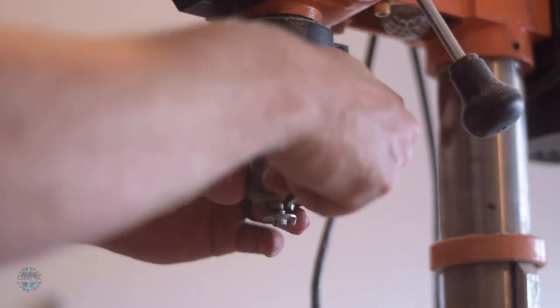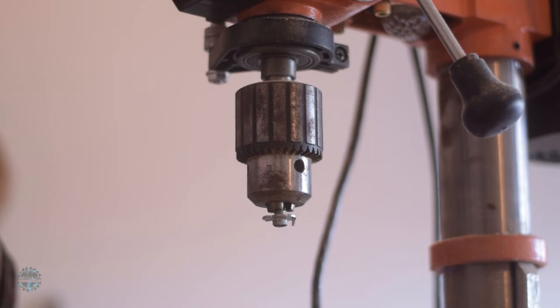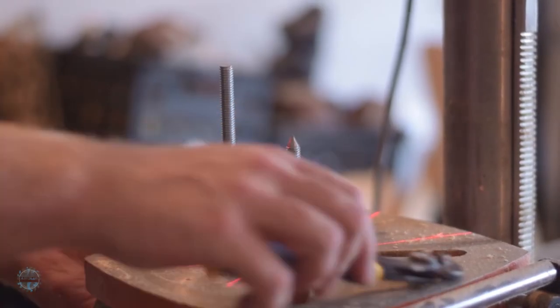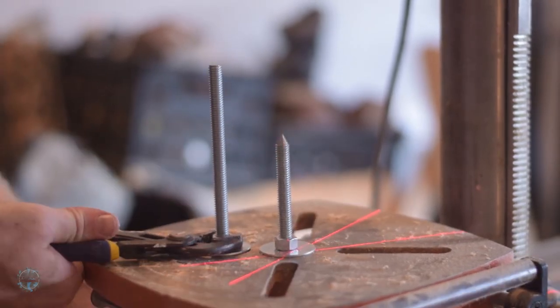Chuck up the lathe chuck and the drill press chuck. Make sure the tailstock quill is centered and then tighten everything down. And it's time for this thing not to work.